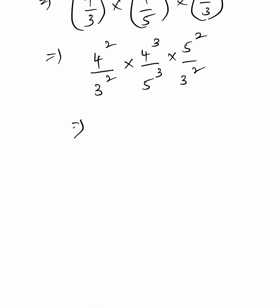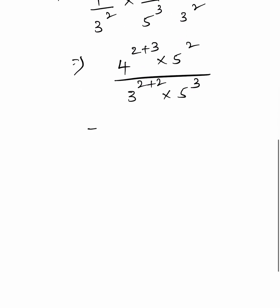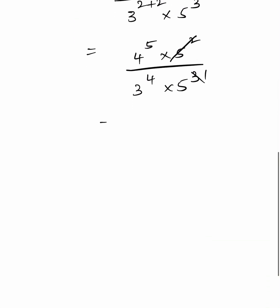When the bases are equal, we add the exponents. That gives 4 to the power of 2 plus 3, into 5 square, by 3 to the power of 2 plus 2, into 5 cube. That equals 4 to the power of 5 into 5 square by 3 to the power of 4 into 5 cube. Since 5 square by 5 cube leaves one 5 in the denominator, the final answer is 4 to the power of 5 by 3 to the power of 4 into 5.